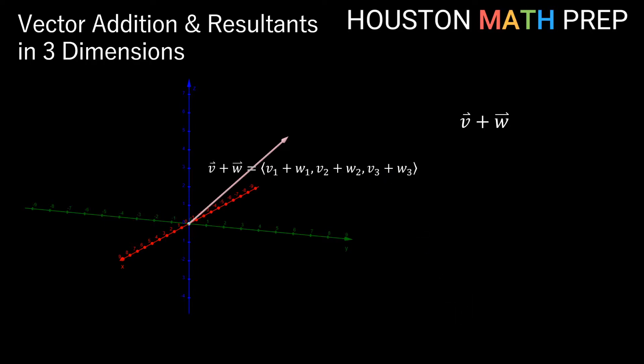Another name for the vector that represents the sum of two or more vectors like this is called the resultant. So this is a resultant vector because it's the sum of two vectors.